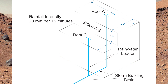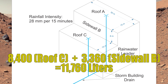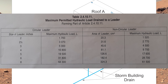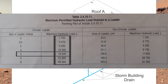To figure out what actually drains down the rainwater leader at C, I take the roof area load of 8,400 liters and add the sidewall load of 3,360 liters, which equals 11,760 liters. Back into table 2.4.10.11 for the rainwater leader — 11,760 liters means I go down to 19,500 liters, go across, and I need a five-inch rainwater leader.